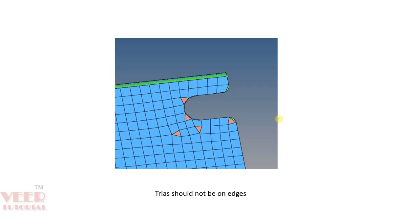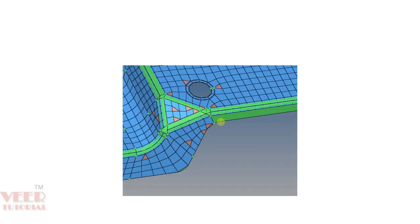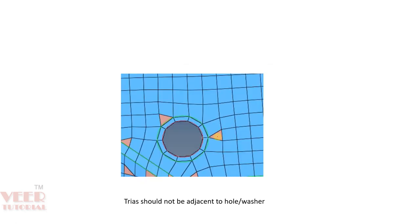In meshing, we need to remember some things. First, trias should not be on the outer edge. Here we can see on this component we have this outer edge, and we can see trias here. Generally, on the outer edge, trias are not allowed. So we have to remove these trias from the outer edge.